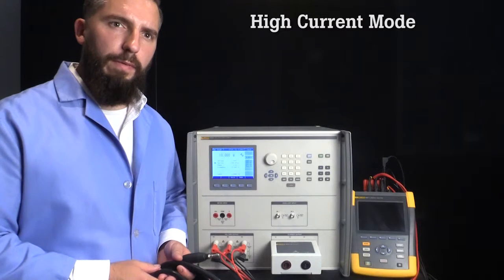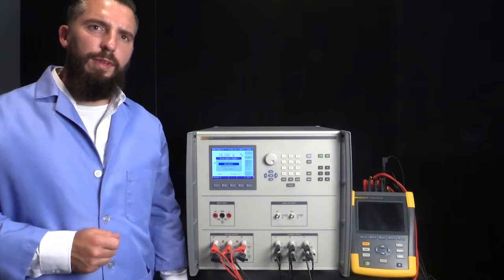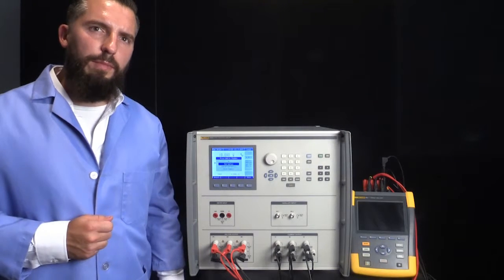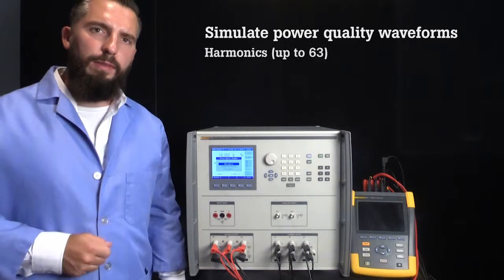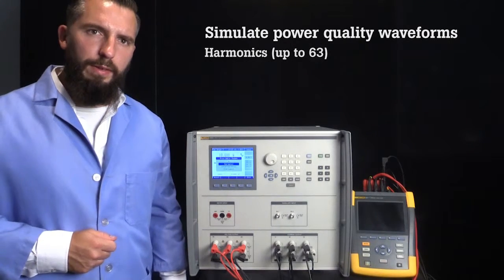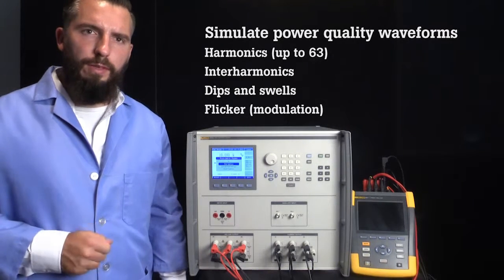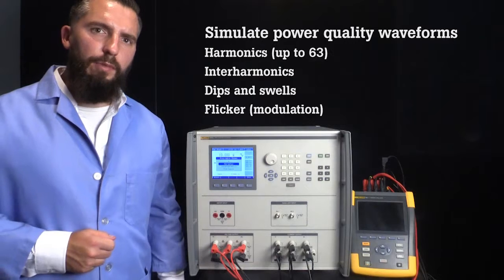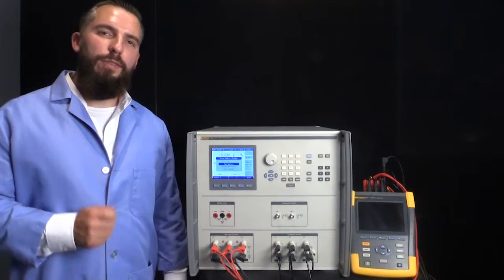The 6003A has unique advanced functions that let you change the output to accurately simulate these power quality waveforms: harmonics up to the 63rd harmonic, interharmonics, dips and swells, flicker or modulation. This functionality will be covered in more detail in another video.